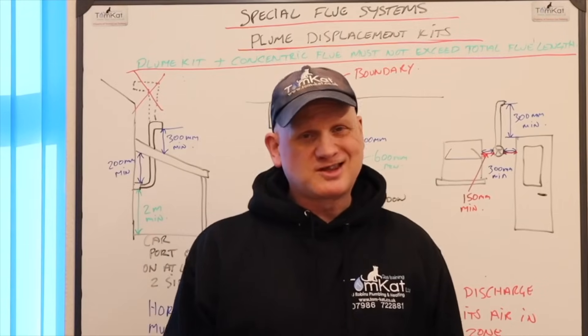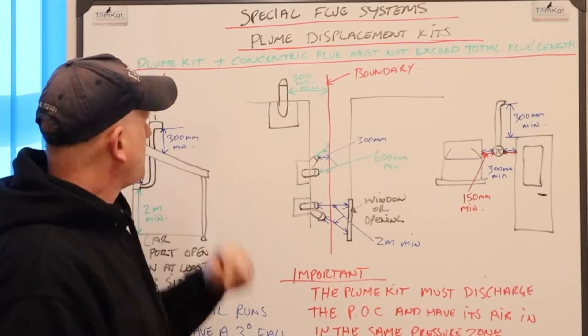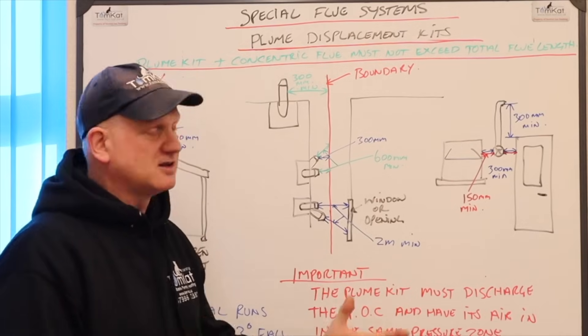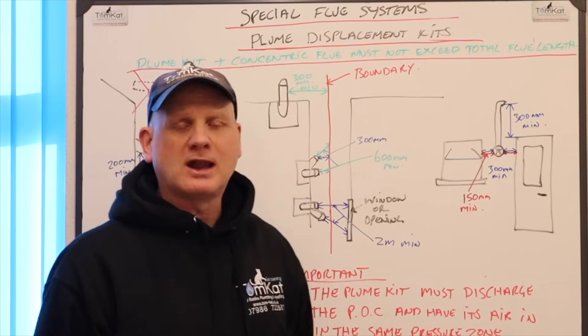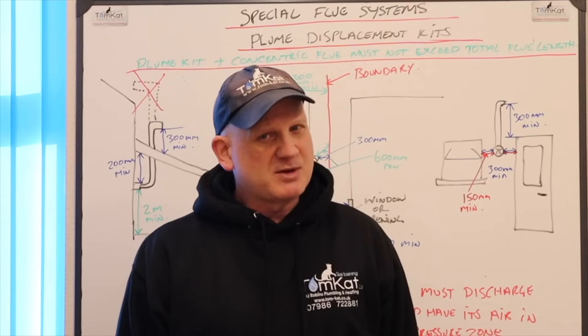Another important flue consideration is what I've put here in green. So, the plume kit plus the concentric flue system, so the standard flue system, must not exceed the total length of the flue system designed for that boiler. So, there might have been a bit of maths involved.